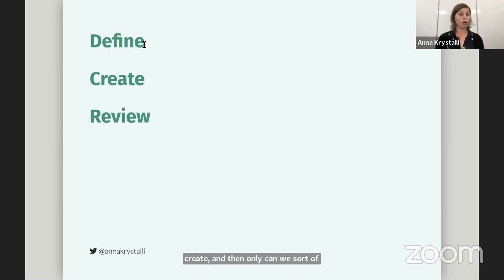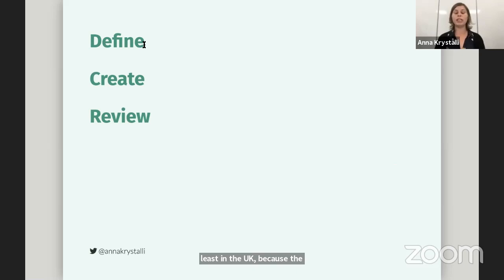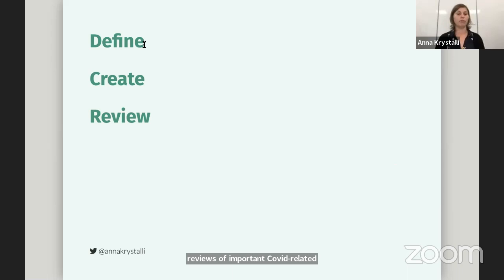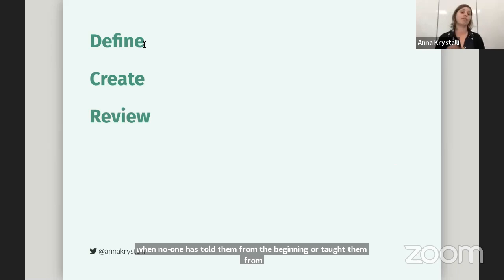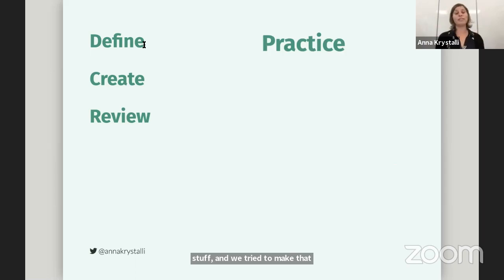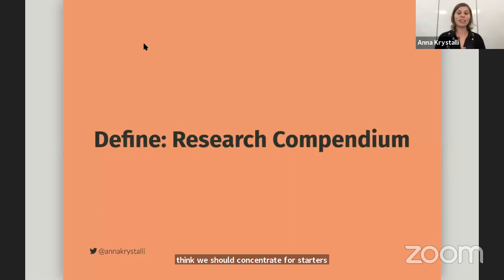I think this is actually quite topical now, at least in the UK, because the SAGE group set up by the government in response to COVID has actually started requesting code reviews on important COVID-related papers that are informing policy. Our team has actually been part of one of these reviews. And in principle I agree it's a good idea, but it does feel unfair to be reviewing people when no one has told them or taught them from the beginning how to do all this stuff. All of these can be improved with practice, but I really think we should concentrate first on defining what exactly it is we want to be producing.